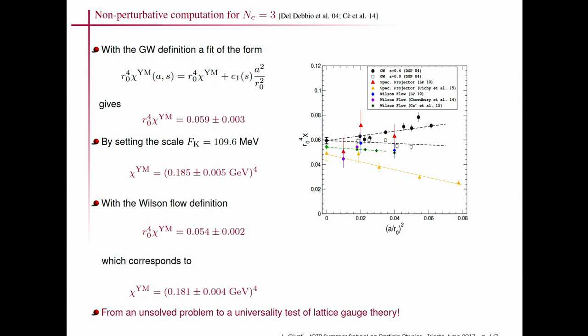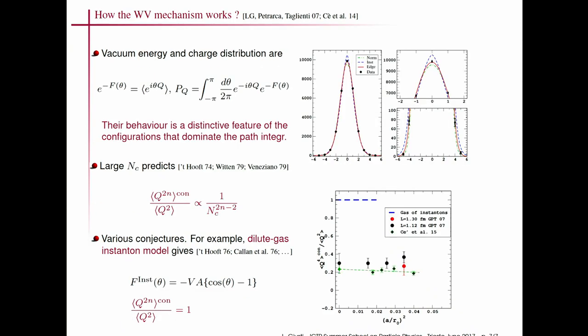Many subsequent computations used different definitions: Wilson fermions (yellow points), and the Wilson flow definition (green, most precise). All definitions differ by discretization effects but agree in the continuum limit within errors — a beautiful example of universality in lattice gauge theory.